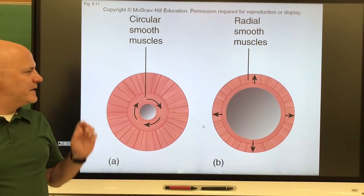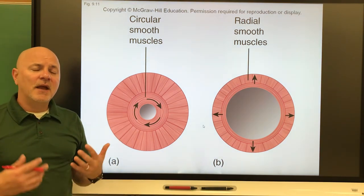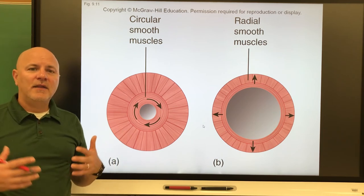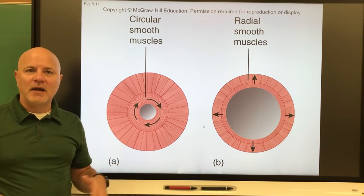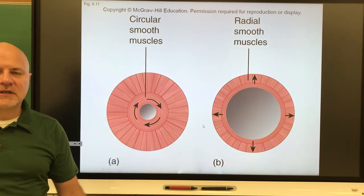This is controlled by our parasympathetic division of our autonomic nervous system, and this typically occurs when we walk into an area that has a lot of light, so outside on a nice sunny day or a room that has a lot of light in it, like the room I'm in right now.